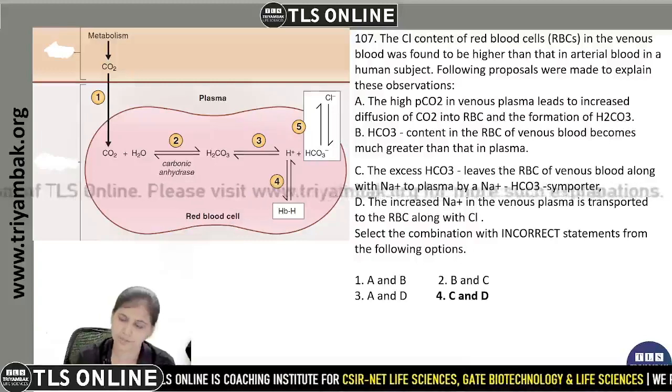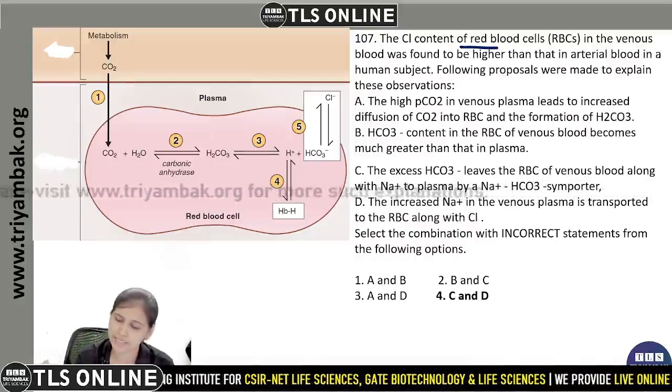The chloride content of RBC in venous blood was found to be higher than that in arterial blood in a human subject. The following proposals were made to explain this observation.